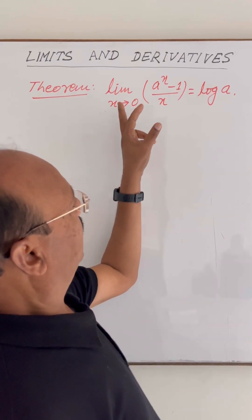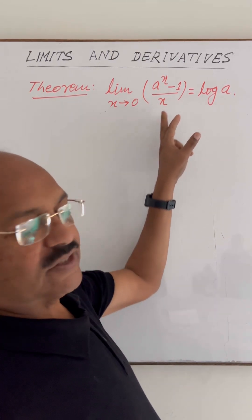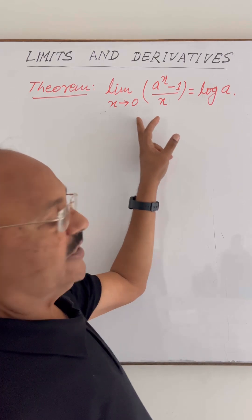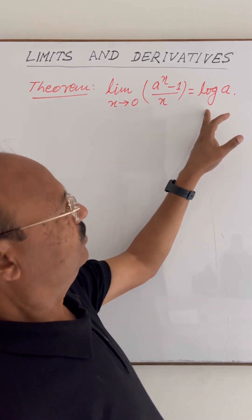We have to prove the theorem: limit as x tends to 0 of (a^x - 1)/x is equal to log a.